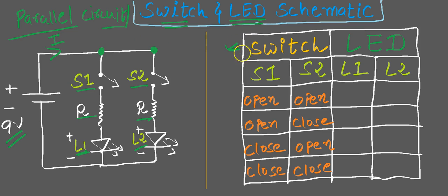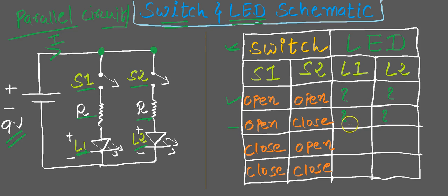Now let us take a look at the position of the switches. Here is a quick exercise for you. When switches S1 and S2 are both open, what would be the position of the LED? If switch one is open and two is closed, what would happen? When one is closed and two is open, what would happen? And when both are closed, what would happen? This is a quick exercise for you.